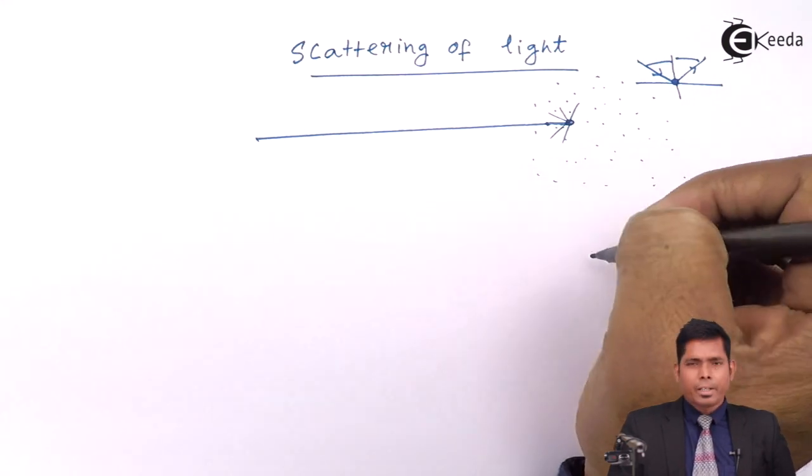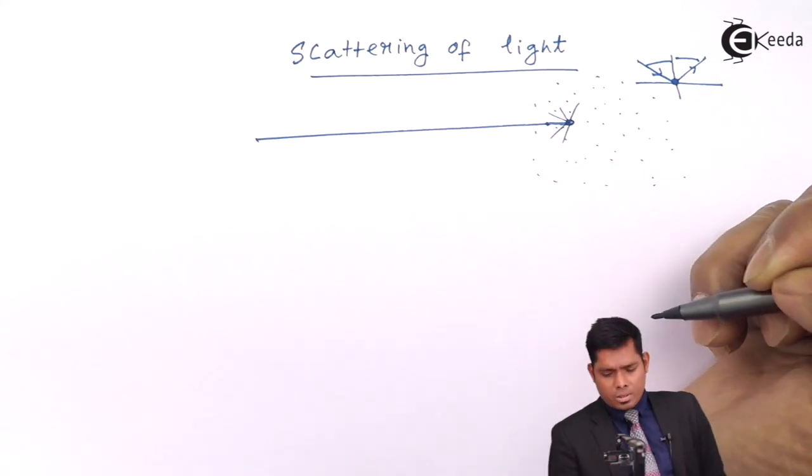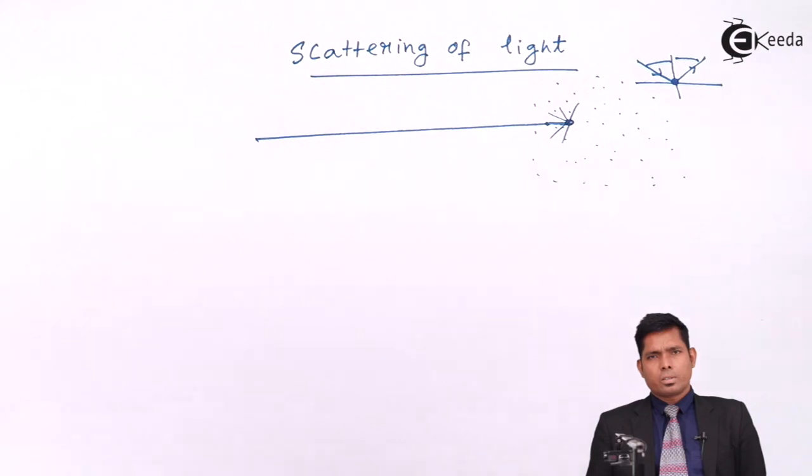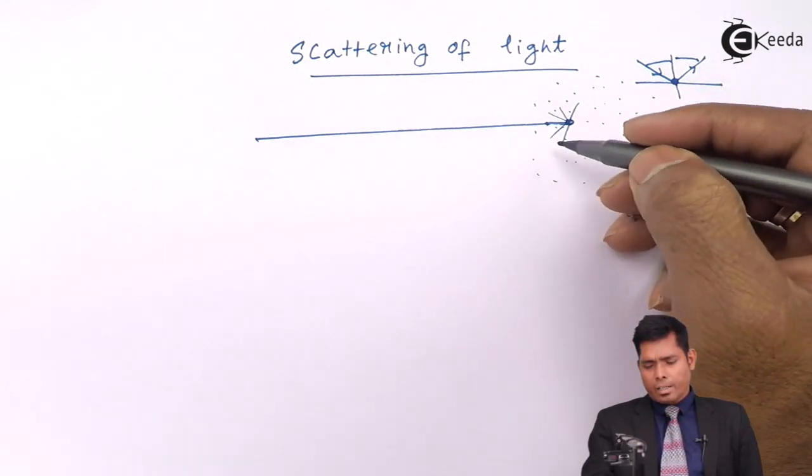In a perpendicular direction there is polarization of light that we will discuss in polarization of light. But it scatters the light in all possible directions.